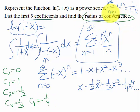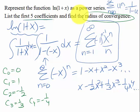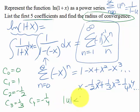Now, our radius of convergence is the same for power series and integration of power series. And so, the absolute value of u has to be less than 1, and in our case that u was negative x, and so our radius of convergence is still 1.